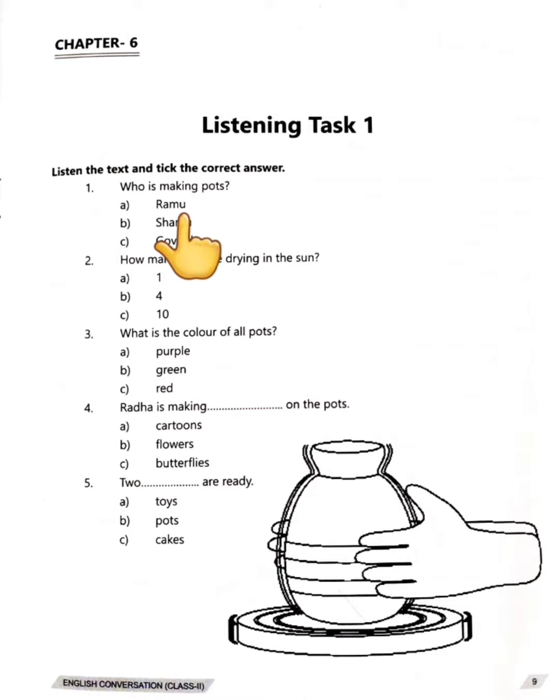Now, I am going to read these questions and I will tell you the meaning of all these questions for your better understanding. Let's read questions 1 to 5, one by one. Question 1 is, who is making pots?